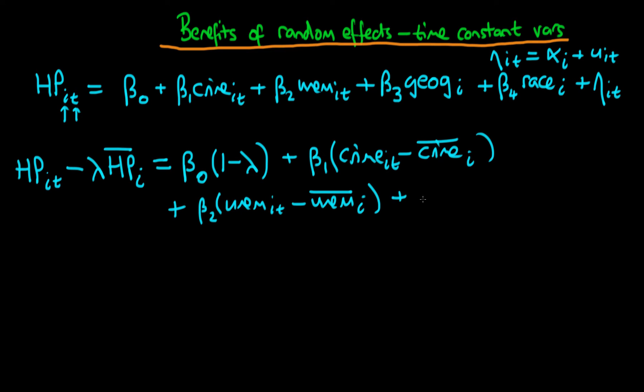But when we come to the first time-constant factor, there is going to be a slight difference. Because geography doesn't vary through time, what we're actually going to be taking off is we're going to be taking off lambda times the geography for that particular city at time i, because the time mean of geography is just geography with the subscript i. Its time mean is just itself.